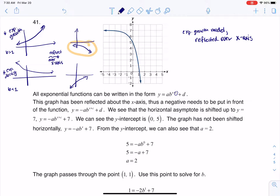You can see that there's actually a horizontal asymptote right here at y equals 7. And so that is the vertical shift. So we've been shifted up seven units.